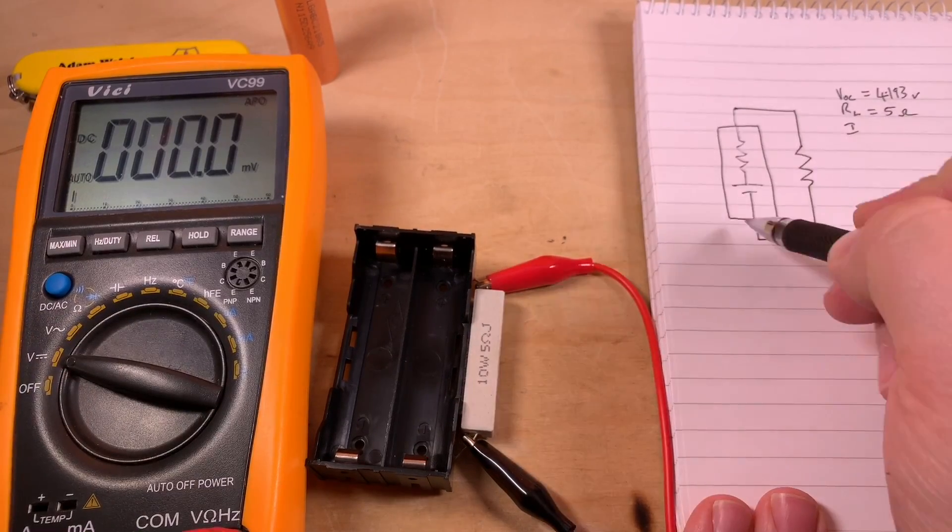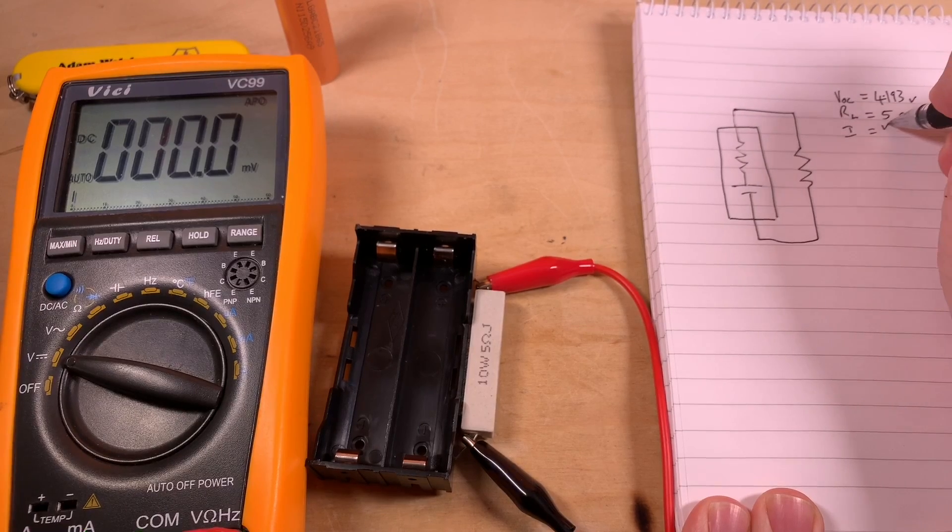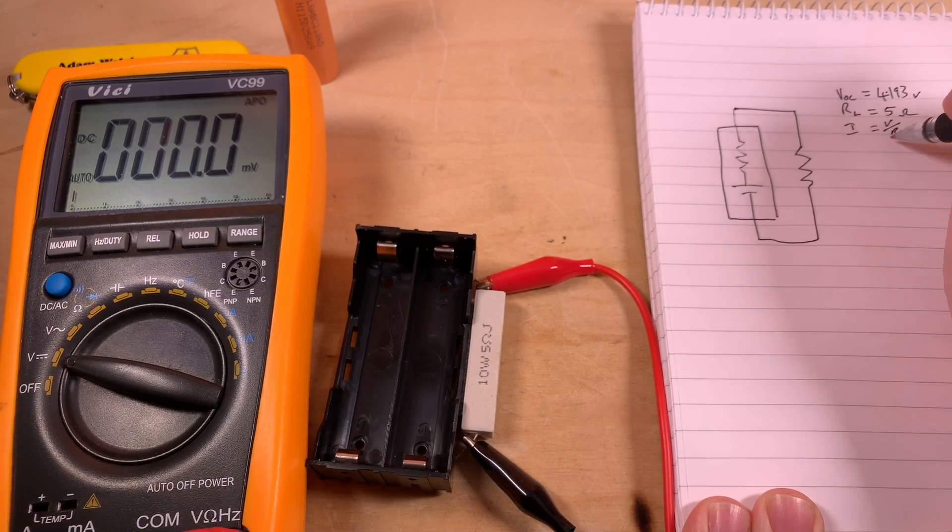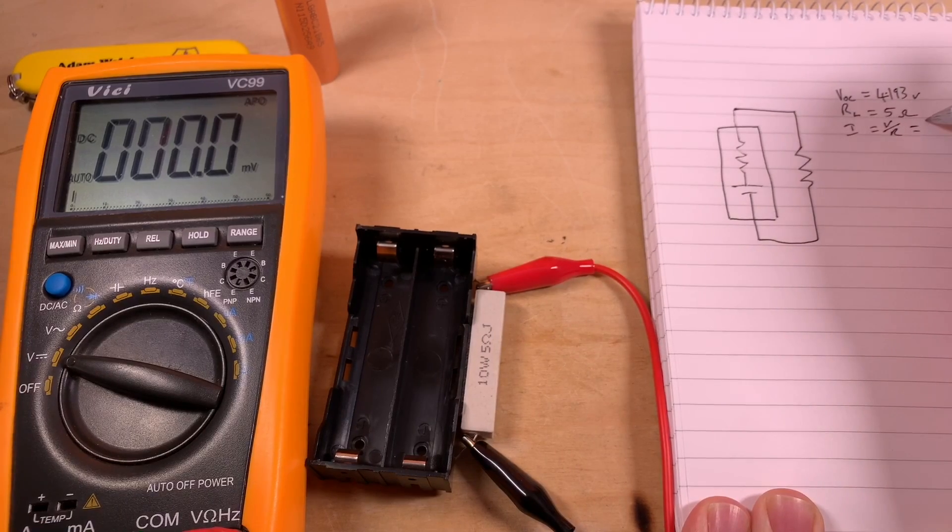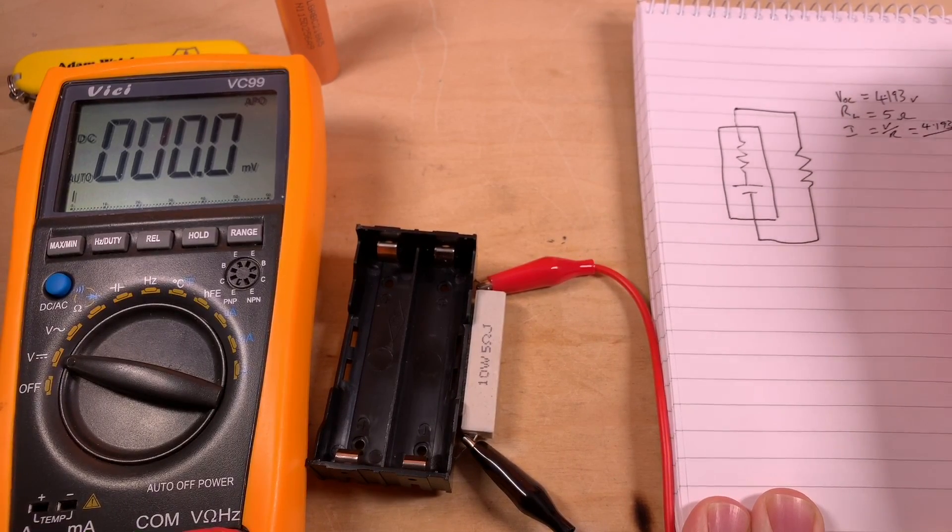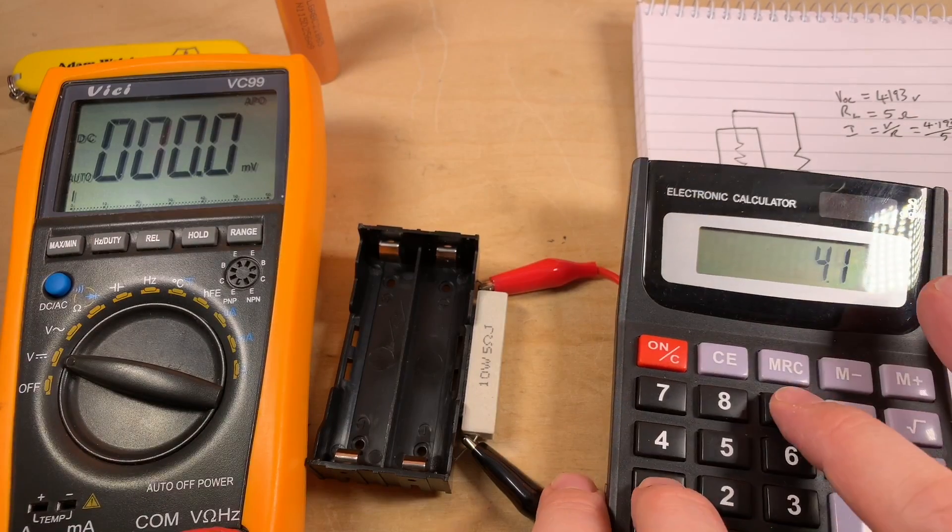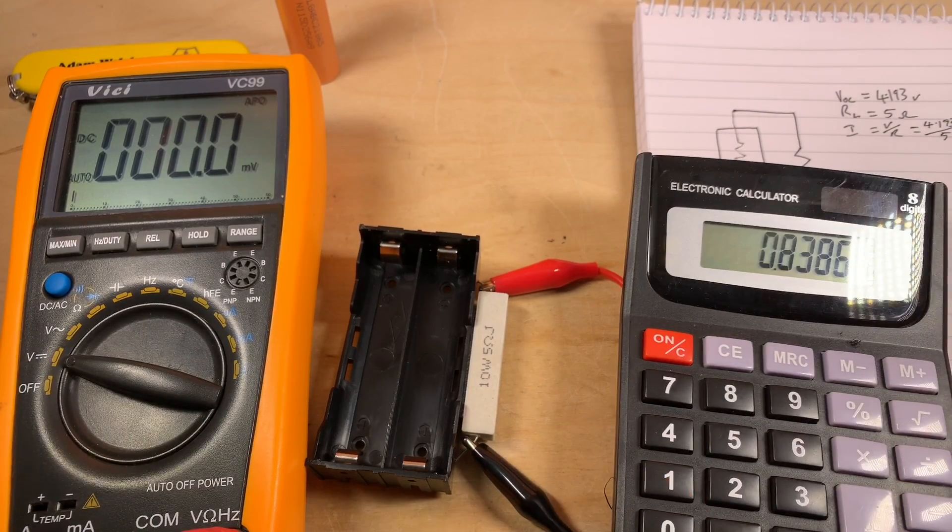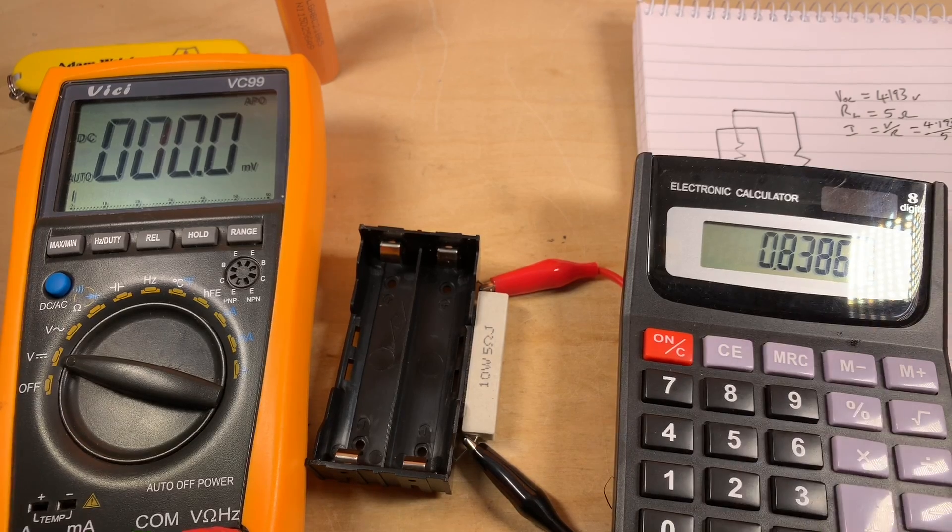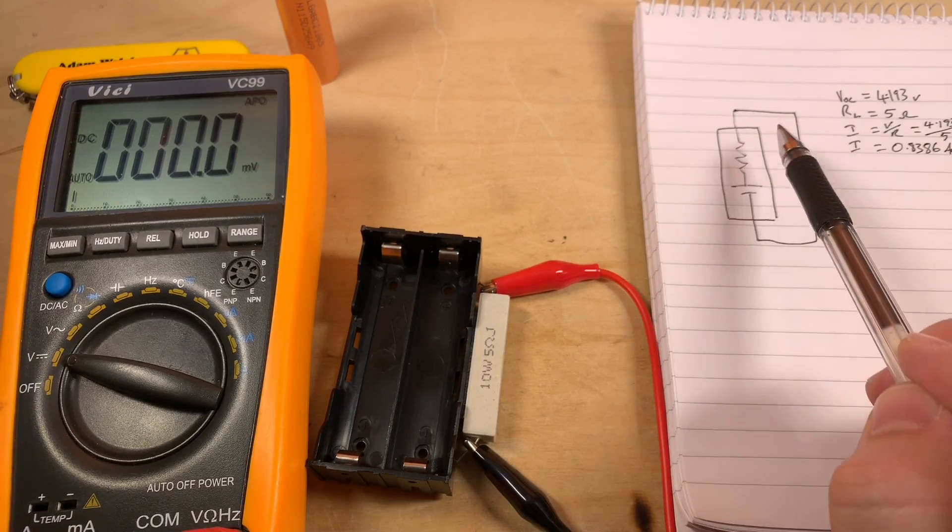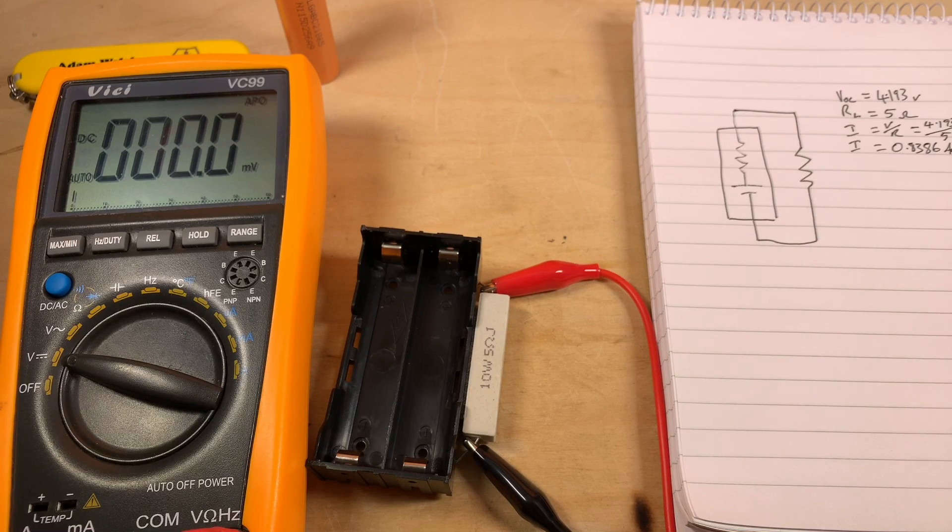Now of course we can work out the current that's going to flow in this circuit: I equals V over R. So I equals 4.193 divided by 5, equals 838 milliamps. But how do we find the voltage drop across this internal resistor? Well, Kirchhoff's law applies, and basically that law says that the voltage drop across both resistors must add up to the voltage of the perfect voltage source, or the open source voltage of our cell.